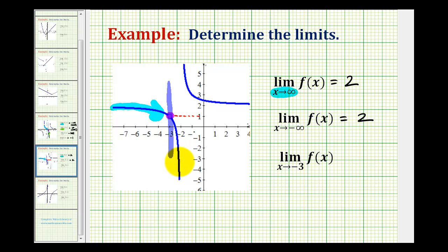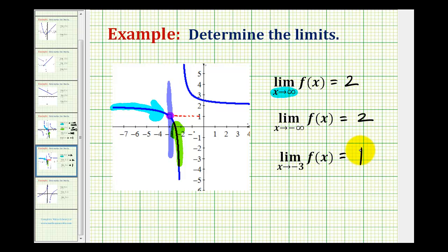Notice how when we approach from the left along here, we're approaching that same point, so the function value is also approaching positive one. So since we're approaching the same function value from the left and from the right, the limit as x approaches negative three of f of x is equal to positive one.